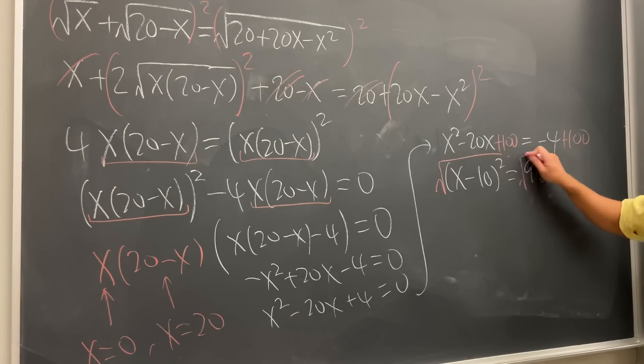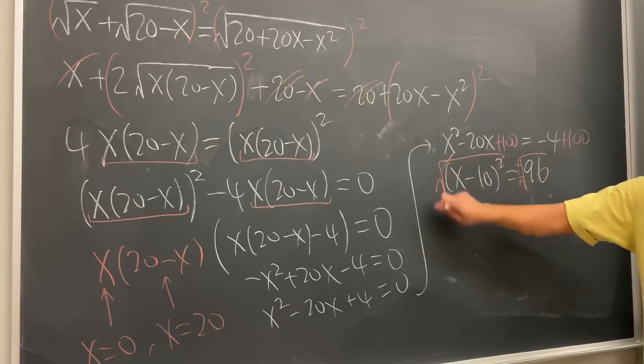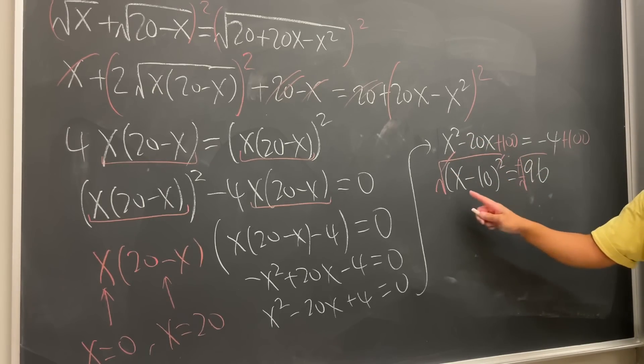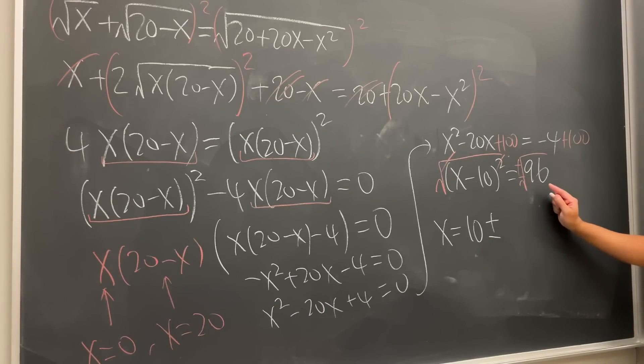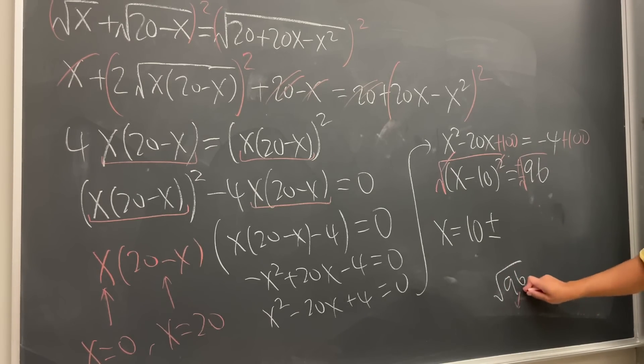Then take the square root on both sides and then put a plus minus 10 rid of this. So ladies and gentlemen, x is equal to 10, and then we have the plus or minus. And let's see. Square root of 20. Square root of 96. 4 works because square root of 96, we can break it down as 4 times square root of 4.